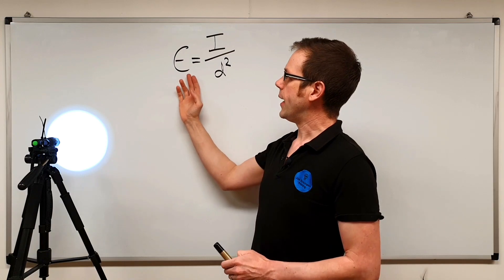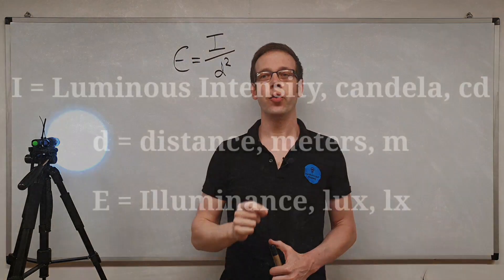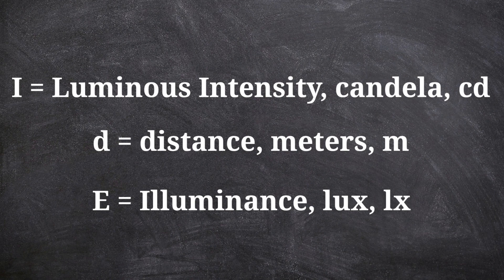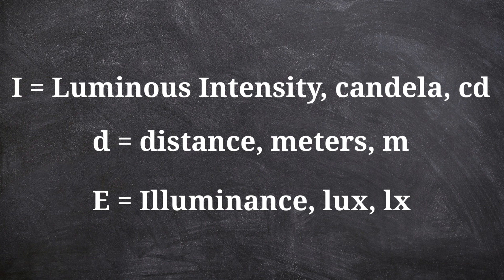We've also got here our letter E. The E in this case stands for illuminance, and that is basically a measure of how brightly lit a surface is or how brightly lit a particular plane is in a room. Illuminance is measured in a unit called lux, L-U-X, and the unit symbol for that is L-X.